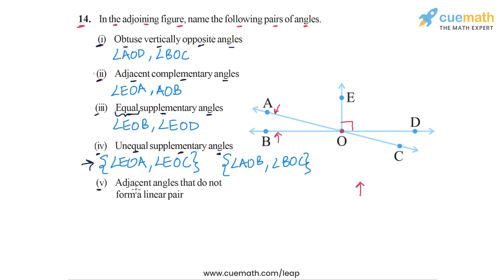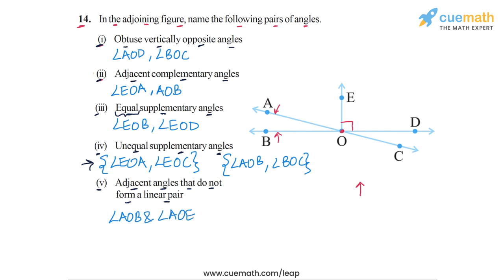In part five, we have to find adjacent angles that do not form a linear pair — meaning their sum should not be 180 degrees. For example, angle AOB and angle AOE are a pair of adjacent angles but they do not form a linear pair, so this is one possible answer.